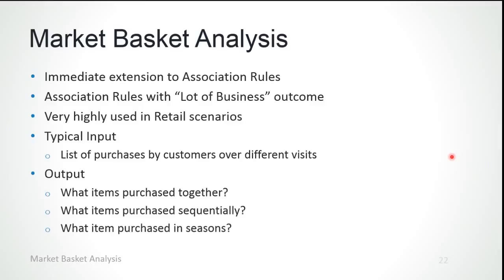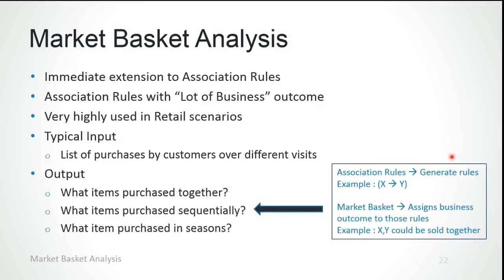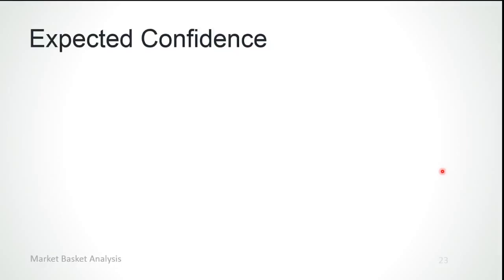The output of market basket analysis is different from association rules. Association rules give you rules like X implies Y, whereas market basket analysis gives you business scenarios or answers to business questions. Market basket analysis assigns business outcomes to those rules — for example, X and Y could be sold together or not.